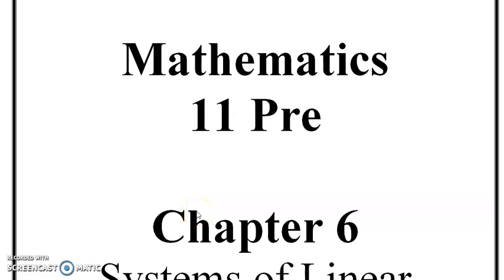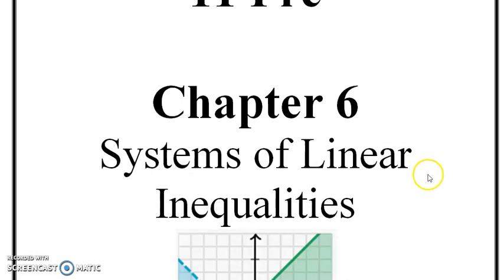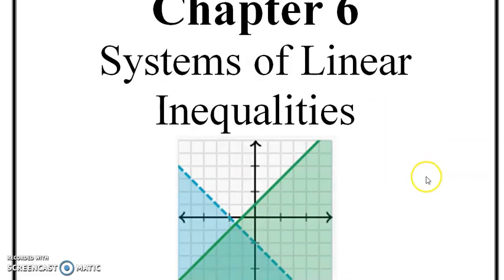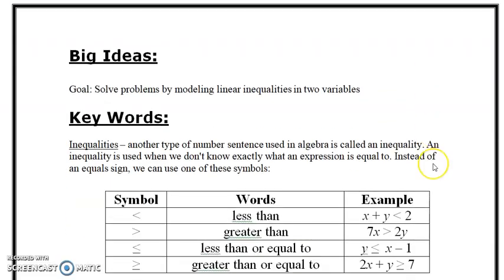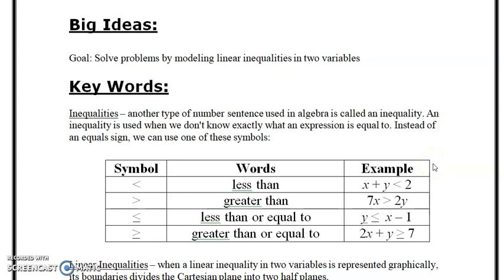Hello everyone. Today we're going to be looking at Chapter 6 from Math 11 — systems of linear equations. Specifically, we're going to solve problems on modeling inequalities with two variables. Here are some of the key words we need to recall, and some of this might be new.